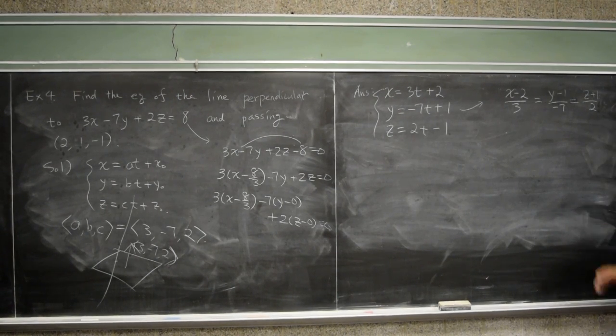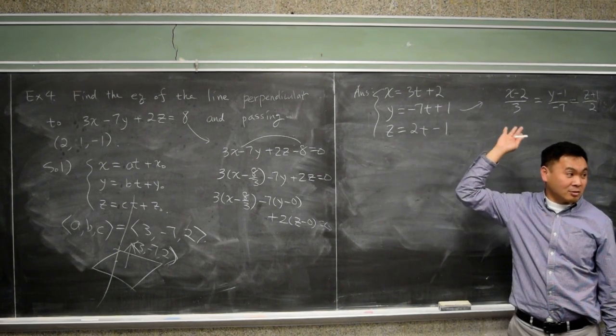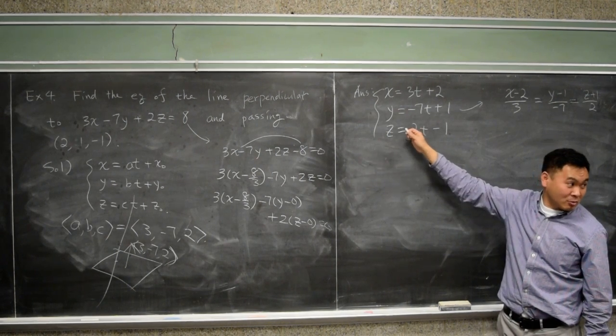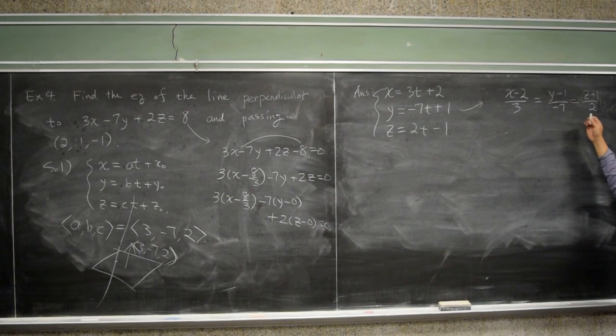It doesn't hurt. I mean, you can write it there if you want. This is what we call the symmetric form. So there are two ways to answer this. If the question says find it in parametric form, this is the one that you have to write. If the question says find it in symmetric form, this is the one that you have to write.